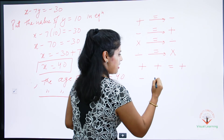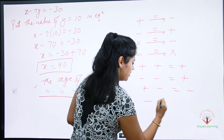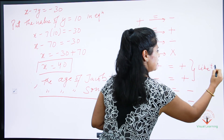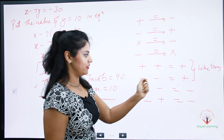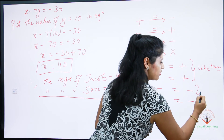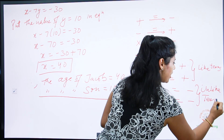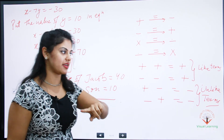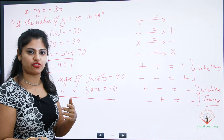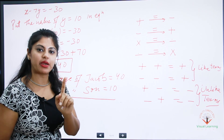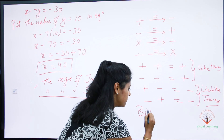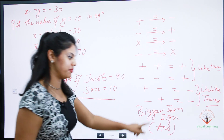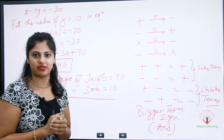Also remember the sign rules: plus × plus = plus, minus × minus = plus, plus × minus = minus, minus × plus = minus. These are the like and unlike terms rules. Like terms — both positive or both negative — give plus. Unlike terms — one positive, one negative — give minus. Always check the sign of the bigger term; the bigger term's sign carries into the answer.